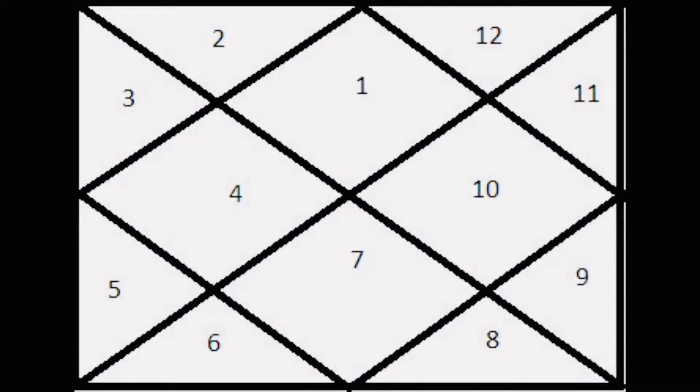As you can see on the screen right now there are 12 houses signified in this chart. These are diamond square boxes called the houses. As you can see the number one that represents the house and similarly it goes from one, two, three, four, five, six, seven, eight, nine, ten until 12. So there are 12 houses.